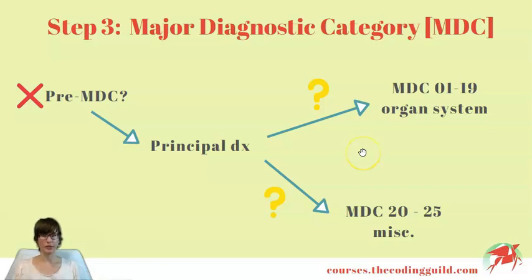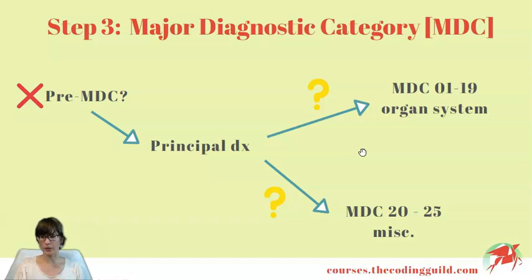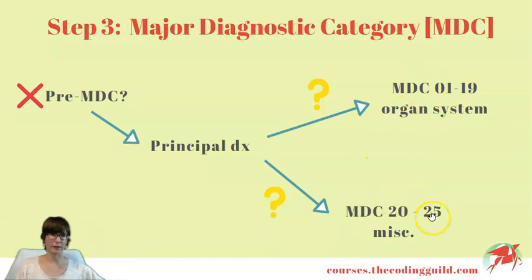Major diagnostic categories are big groupings holding DRGs together that are somehow similar to each other. This similarity is based on usually organ system, medical specialty, or etiology of the disease process. Major diagnostic categories can be divided into 2 groups: organ system based ones and miscellaneous.